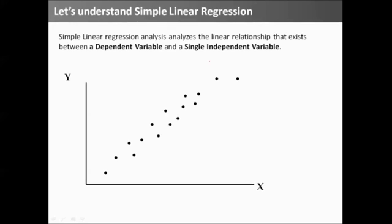So, let us understand how linear regression works. As I said, we connect the dots. Simple linear regression analyzes the linear relationship that exists between y variable, the dependent variable, and x variable, the independent variable. This is simple linear regression. We will then go to multiple linear regression, where x variables would be more than 1.